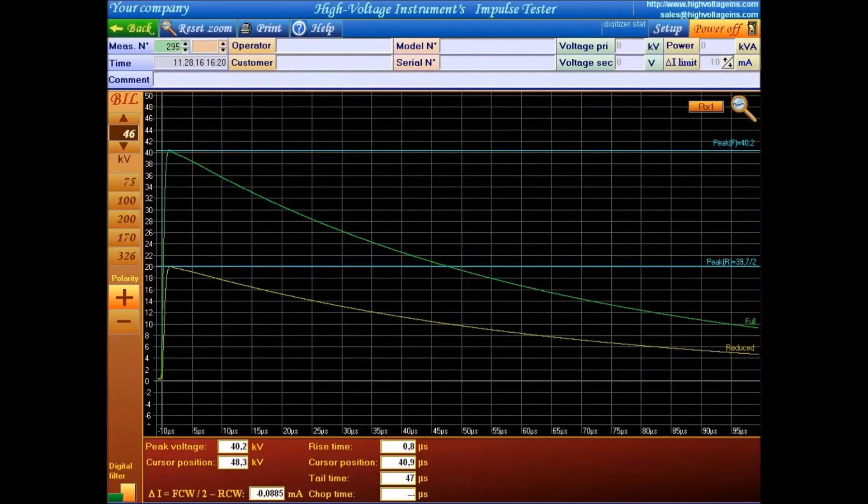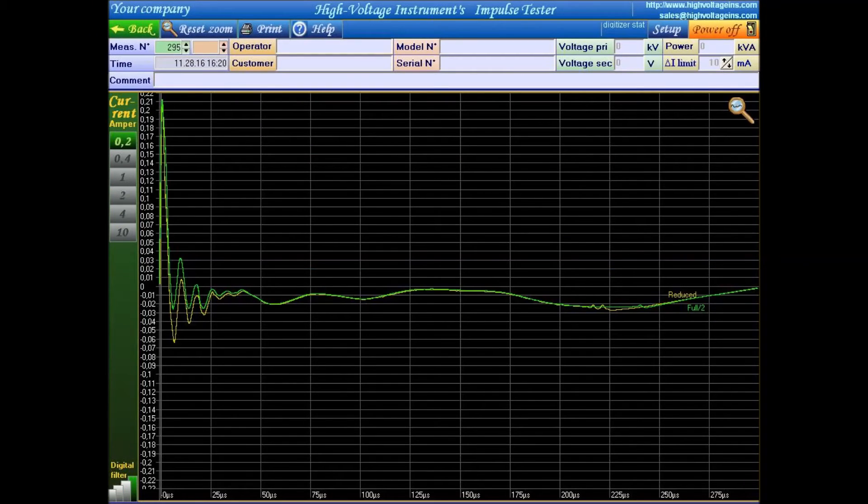This is the enlarged voltage waveforms. This is the current waveforms enlarged on top of each other, the green and the yellow.